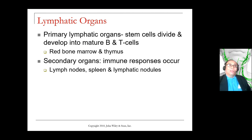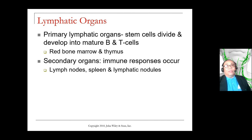Now let's look at the lymphatic organs. The lymphatic organs are divided into primary lymphatic organs and secondary lymphatic organs. The primary lymphatic organs consist of the red bone marrow and the thymus. They are called primary lymphatic organs because this is where lymphocytes actually originate — this is where they are created and where they develop into either B cells or T cells.